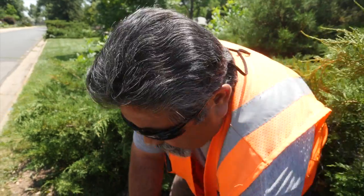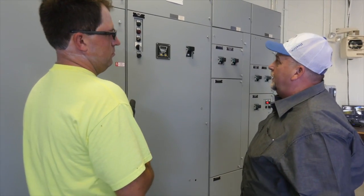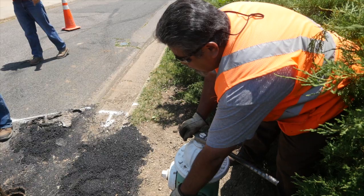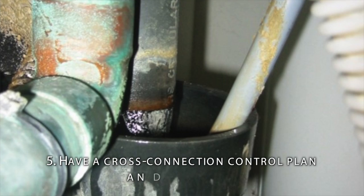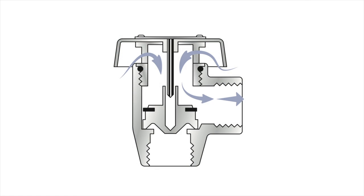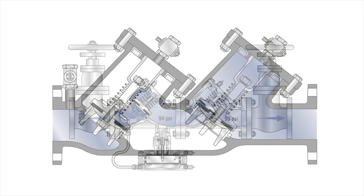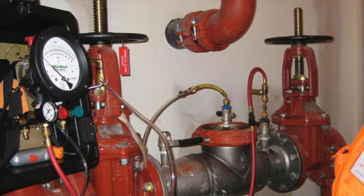Understanding and monitoring your pressure is essential for controlling your system and protecting water quality. Most utilities monitor pressure at convenient locations like a pump station. However, this doesn't give you an indication of what is happening in the distribution system. Find a location or locations that are representative of your system to monitor pressure. Along with pressure control, it's important to have a cross-connection control program. Cross-connections are points where contaminants can be introduced into your distribution system and are one of the leading causes of contamination. An important strategy is to identify potential hazards and install backflow prevention devices, then routinely inspect these devices to make sure they stay in working order.